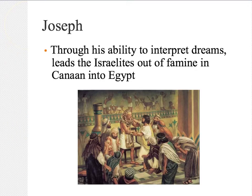Joseph, because of his ability to interpret dreams, is going to have a major role in where the Israelites go. Joseph's jealous brothers — all jealous because Jacob preferred him, even though they were older — sold him off to slavery in Egypt. But while in Egypt, Joseph was able to interpret the dreams of the Pharaoh that predicted there would be a great famine. And so, because of that, Egypt was able to prepare — they stored up food and water and supplies so that when the famine came, they would have enough.